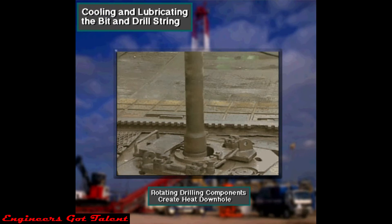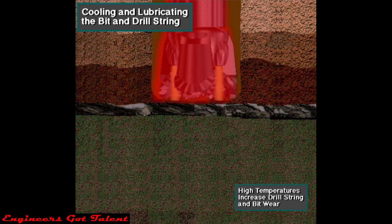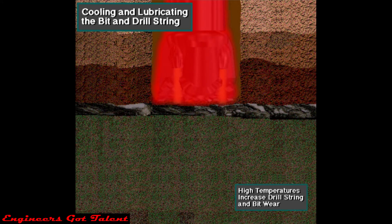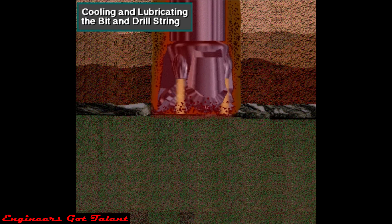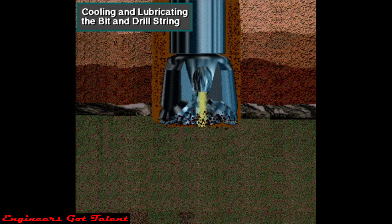Heat is encountered downhole. Deep formations can be very hot, and friction from rotating drilling components generates a lot of heat. High temperatures increase drill string and bit wear. Drilling fluid helps to reduce the temperature in the drill string downhole while drilling. In addition, drilling fluid provides lubrication to the drill string and bit that also helps prevent wear.